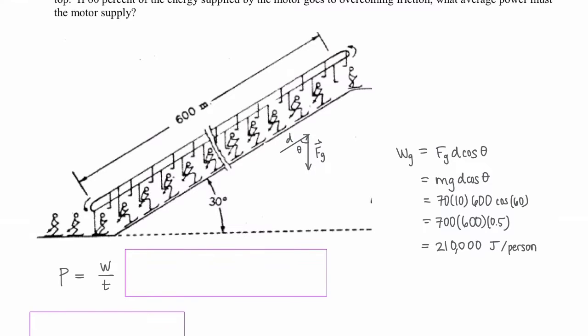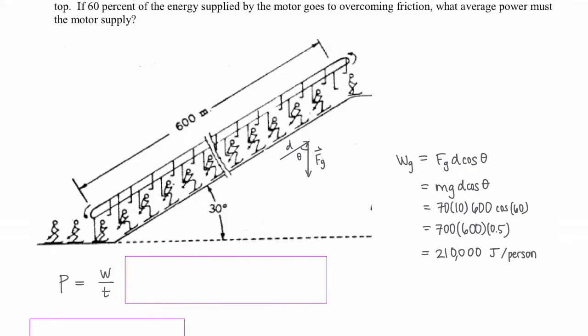But we want to figure out how much the whole ride is doing by carrying up around six people per minute. Six people per minute is pretty straightforward. We just need to multiply the work per person by six, and divide by 60 seconds because that's how long one minute is. That gives us 21,000 watts.